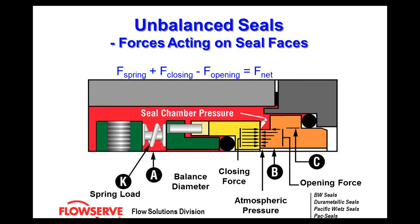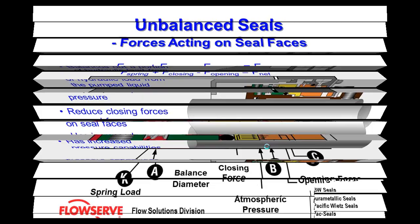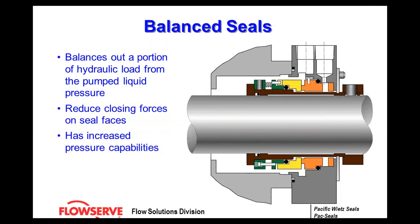The seal chamber pressure also acts to open the two faces and provide the lubrication needed to operate the mechanical seal — it starts at a higher pressure in the seal chamber and drops toward atmospheric on the other side. A balanced seal balances out a portion of the hydraulic loads from the pump liquid pressure, reducing the closing forces on the seals and providing increased pressure capabilities. Balanced seals allow you to engineer the desired leakage and are the most common in API applications; most high-end pumps will have balanced seals.